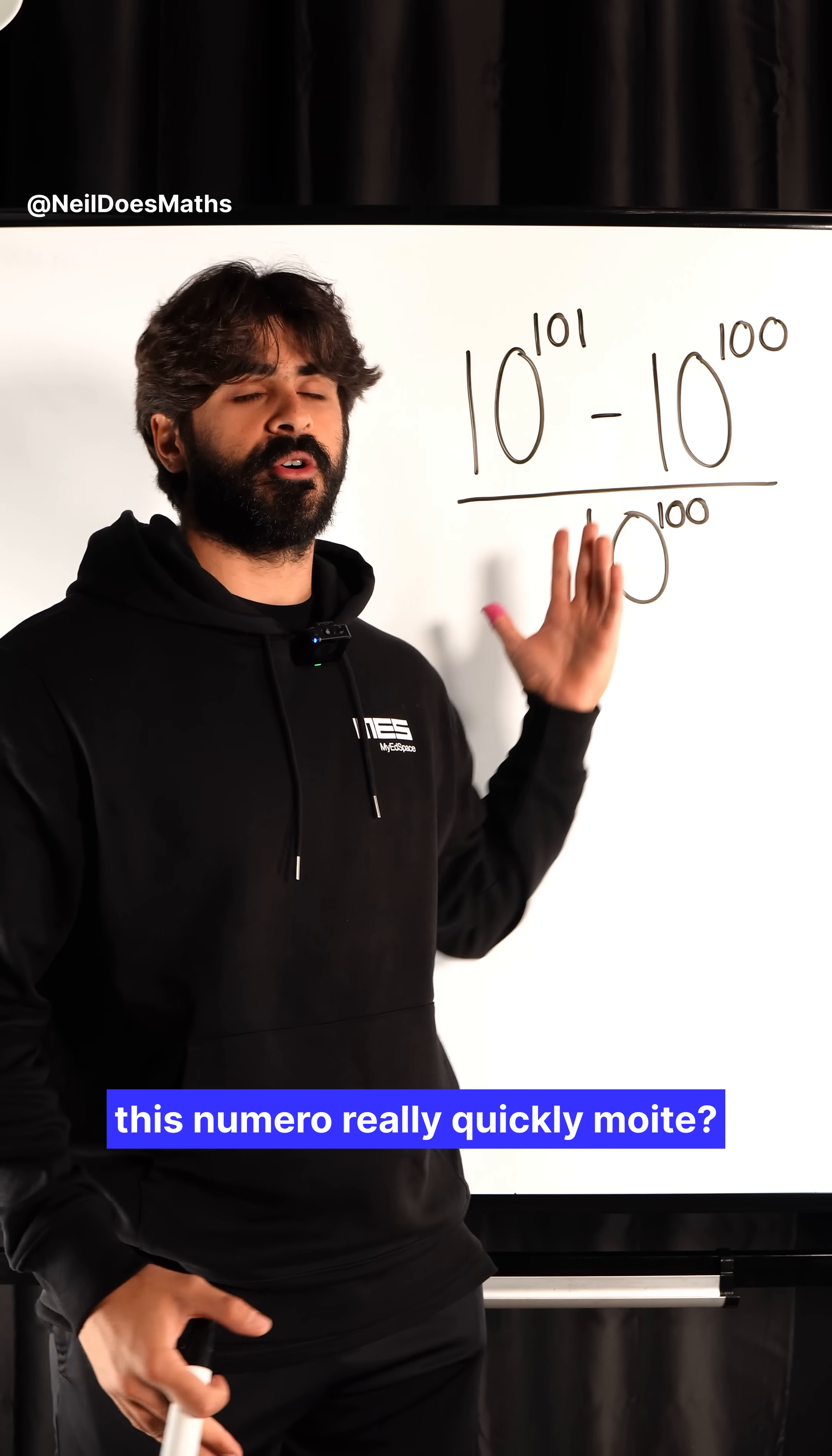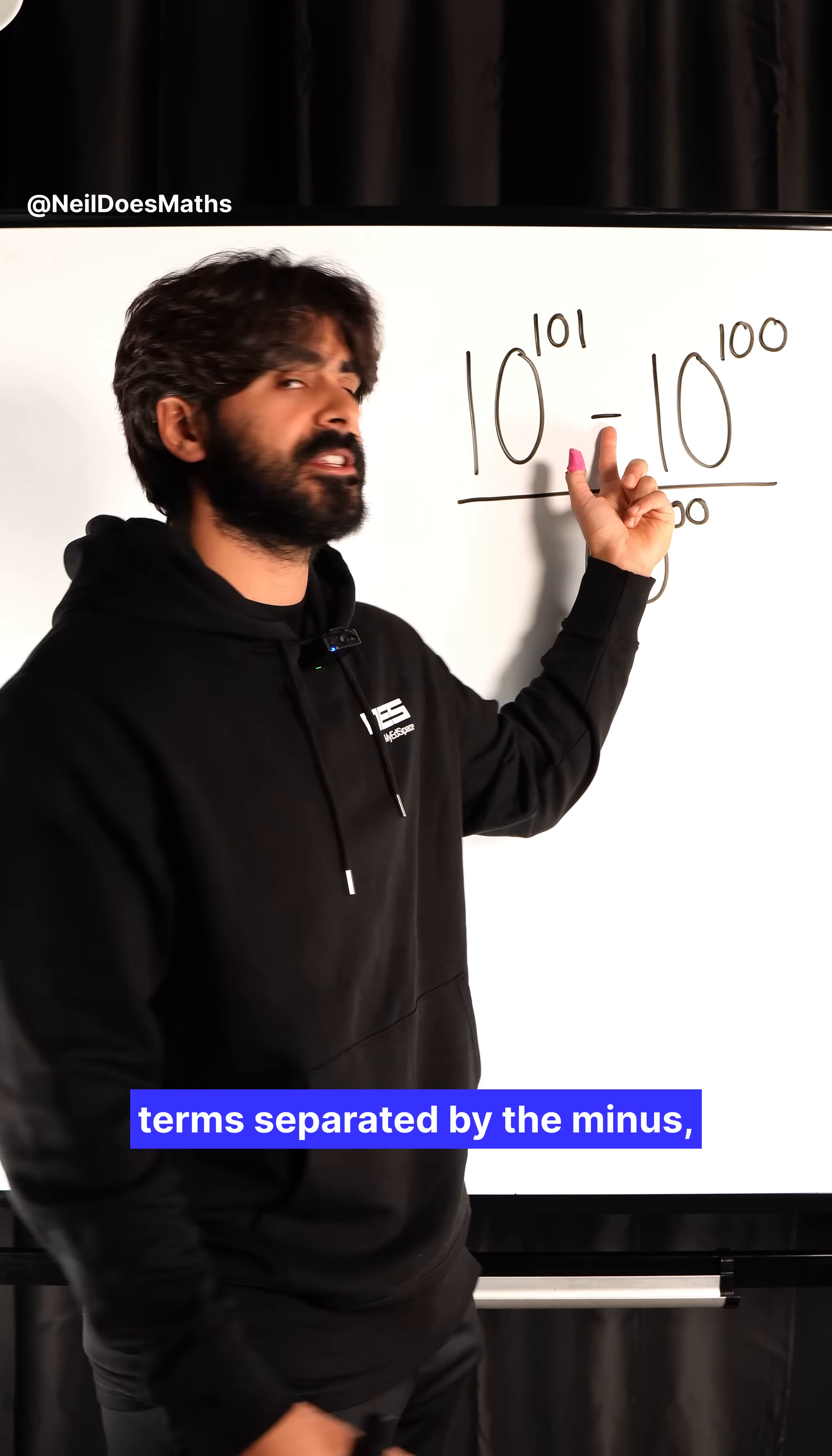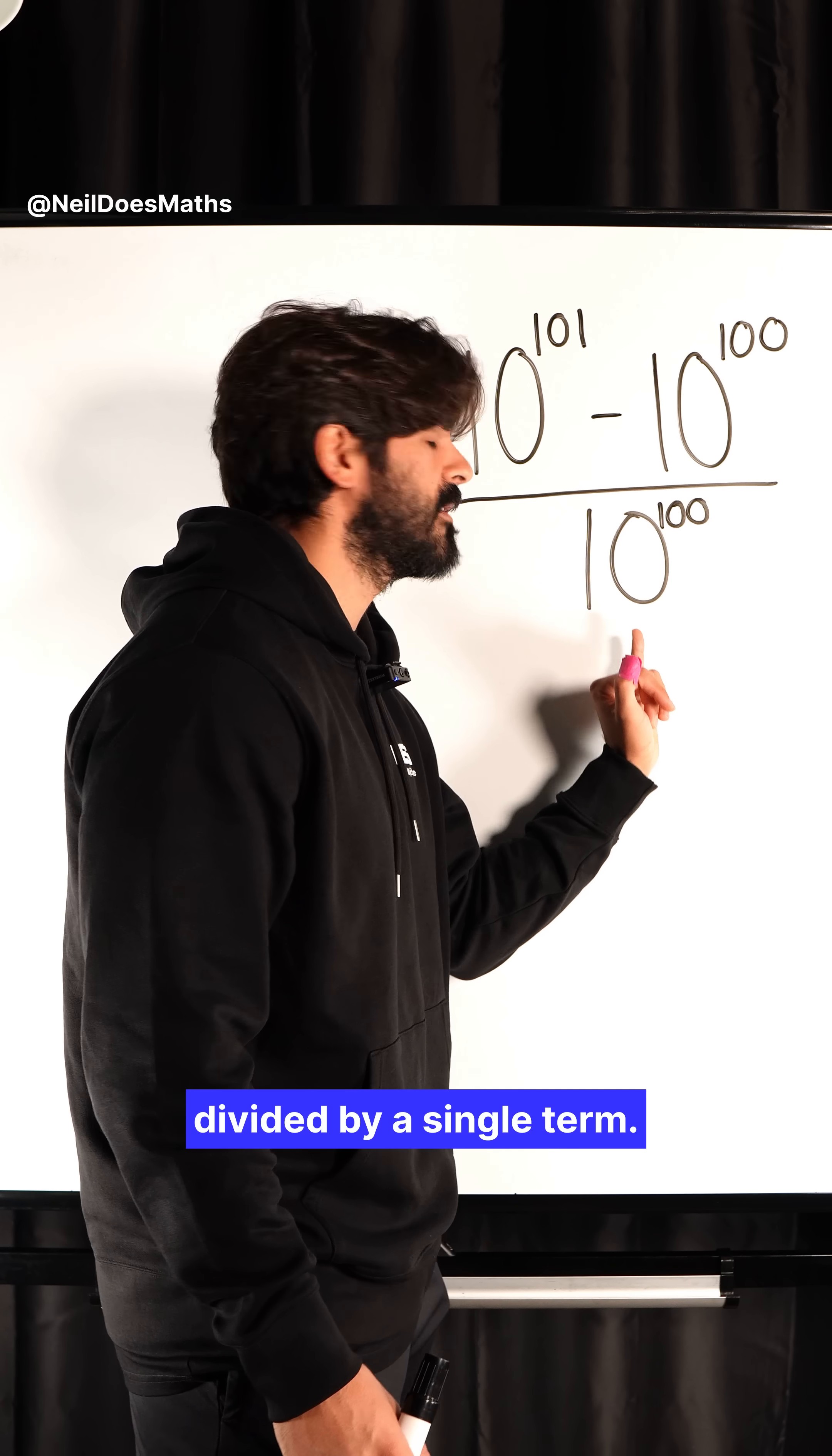Can you simplify this numero really quickly? Let's have a look. Now, my first observation here is that on the numerator, I have two separate terms separated by the minus, and in the denominator, we have one term. So we're doing two terms divided by a single term.